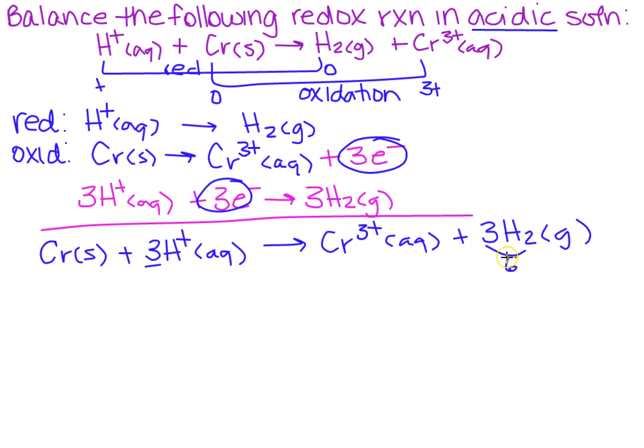So how am I going to do that? This side is more, so I'm going to have to do it over here. So I need to multiply through by what? I need a two here. So let's do that first. So I've got Cr solid plus 6H plus aqueous yields Cr3 plus aq plus 3H2 gas.